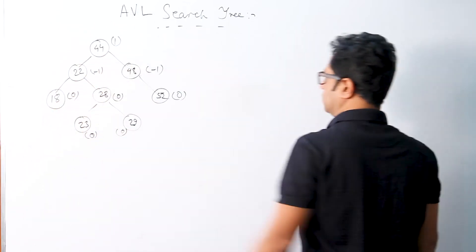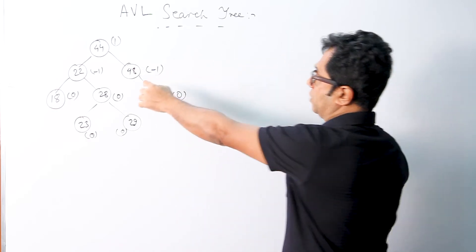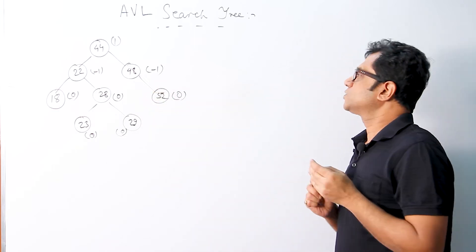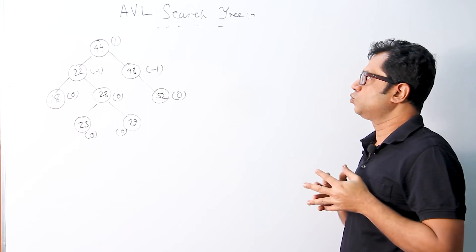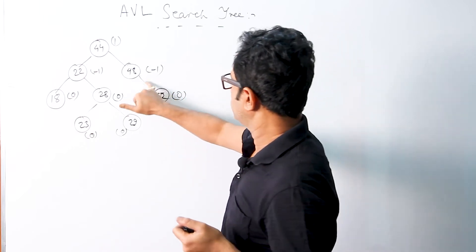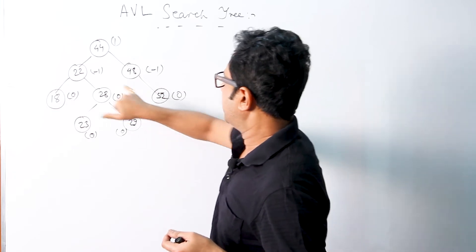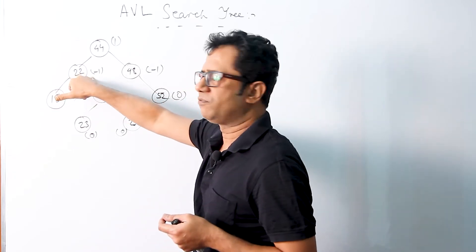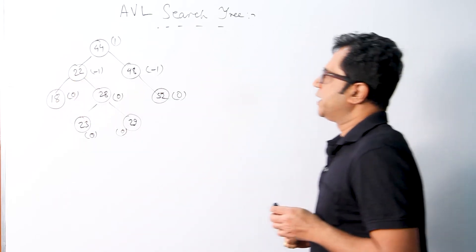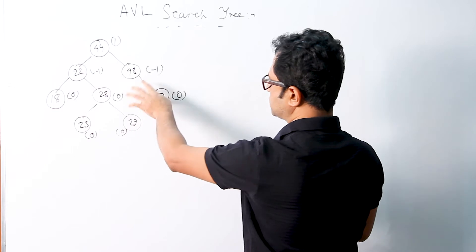We have to perform the deletion in a way so as to apply the R minus one rotation. I am going to focus on the R minus one rotation in this example, so we are going to delete node 52. This will be a right deletion, and since node 48 — considered as node B — has a balance factor of minus 1, the rotation can be identified as R minus one rotation. So we will delete 52 and see what happens next.